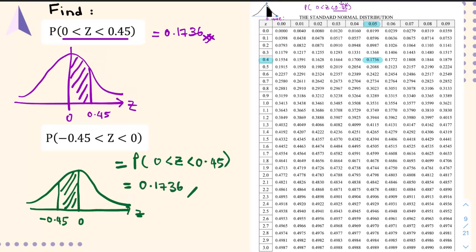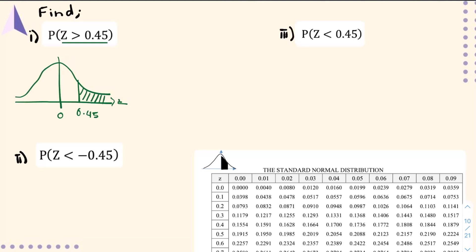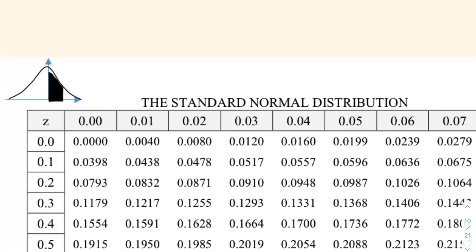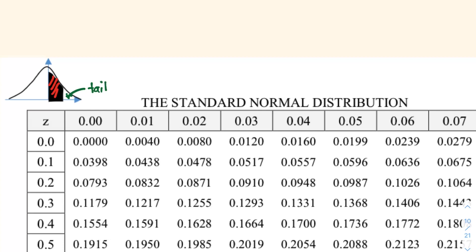Let's continue to this question: find P(Z > 0.45). First draw the curve — this is Z, starting from 0, with 0.45 on the positive side. Since the question asks for Z greater than 0.45, the shaded region is the tail part. Now look at the table — the table shows you the middle region. What the question asks for is the tail part. If you combine the middle and the tail, you get P(Z > 0), which is equivalent to 0.5.